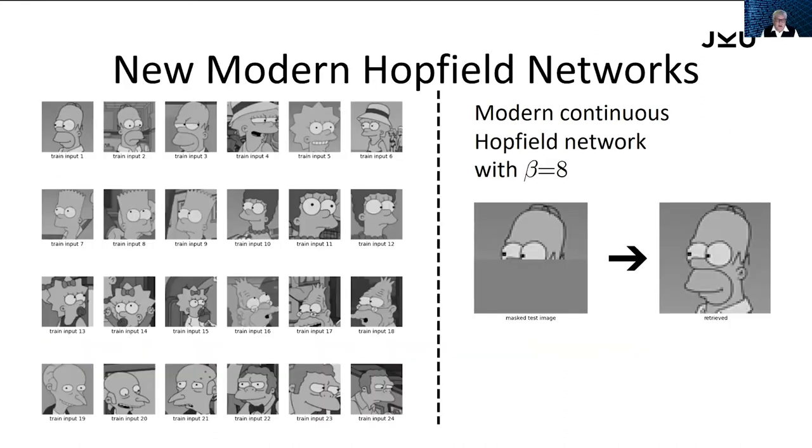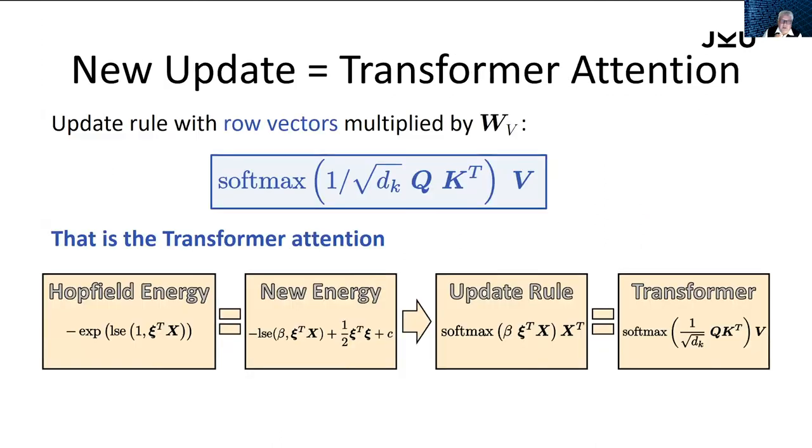Here we see a modern Hopfield network retrieving the pattern even if it's continuous out of many correlated patterns.